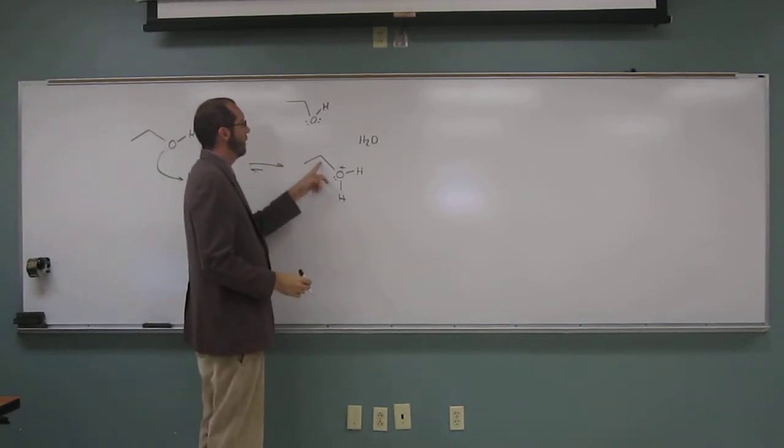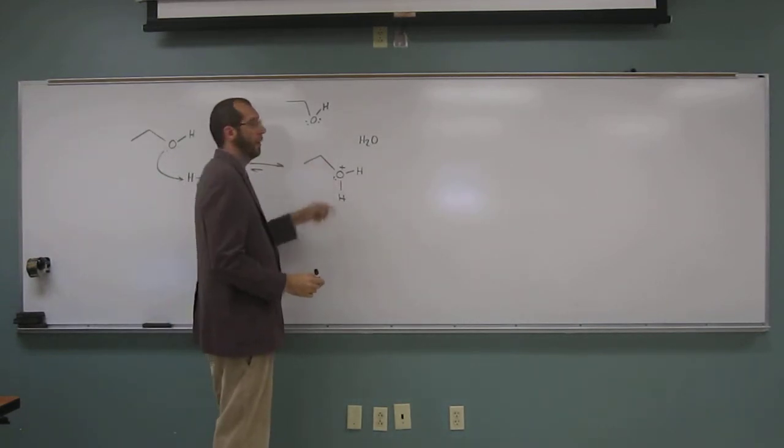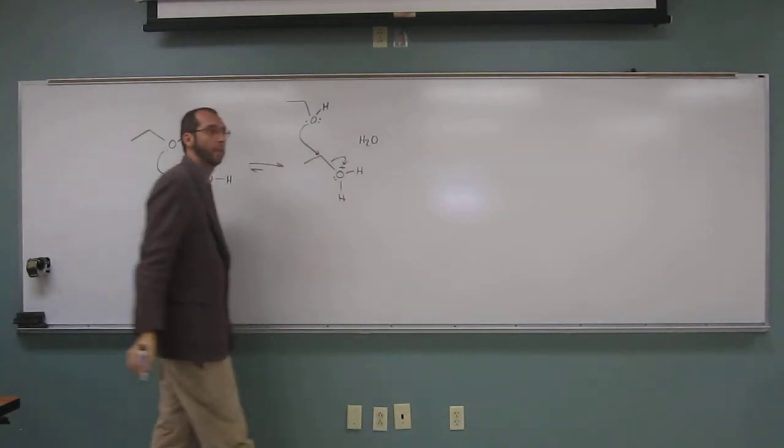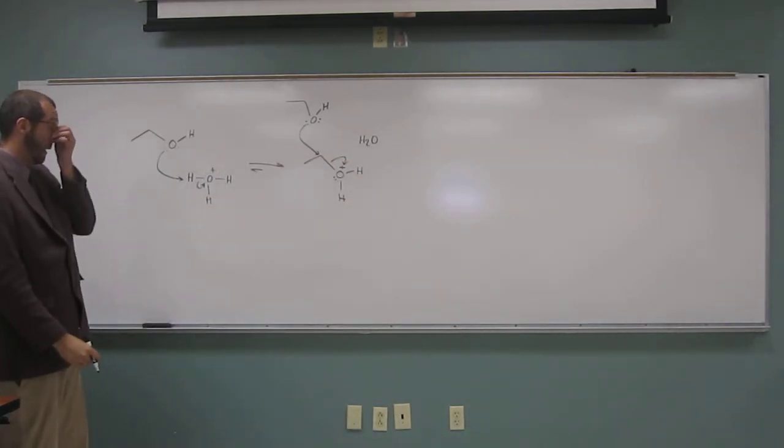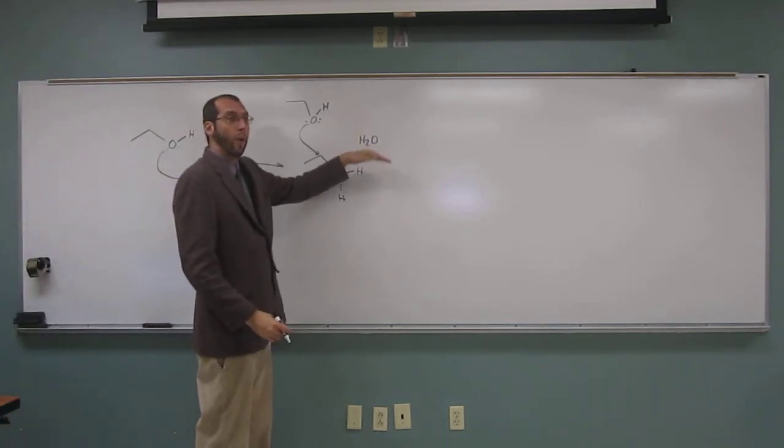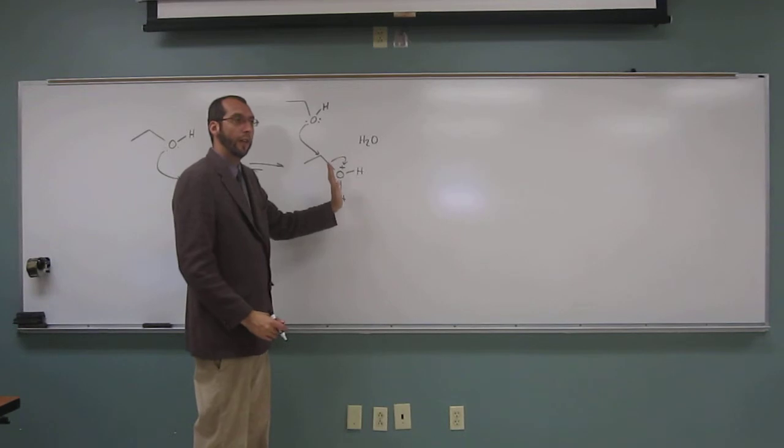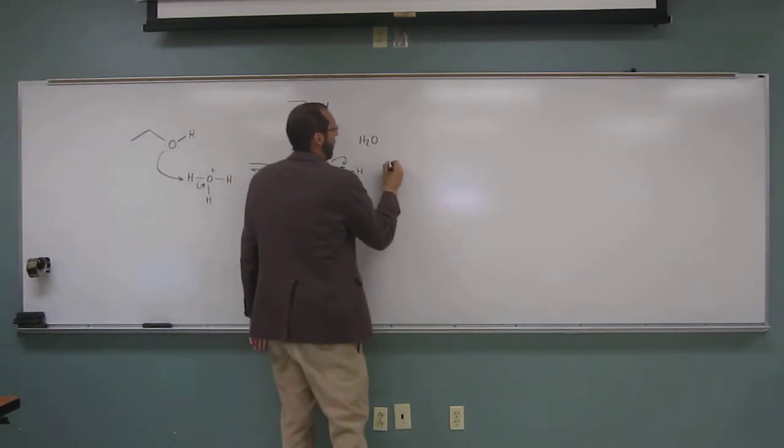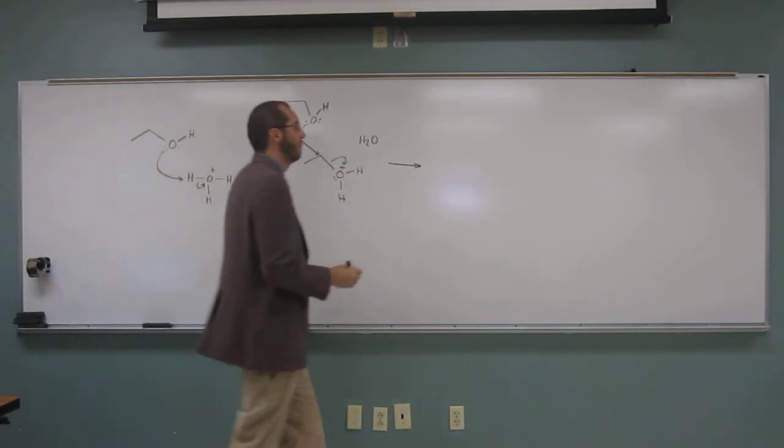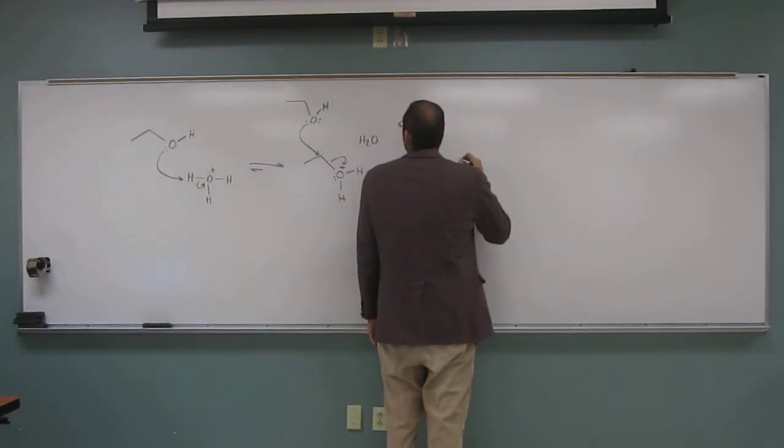Okay, so the lone pair sees that electrophilic carbon there. So, backside attack, SN2. It's going to hit it, knock off the stable water molecule there. So, good leaving group, right? And that's going to be your forward arrow. So that's what's driving the reaction there.